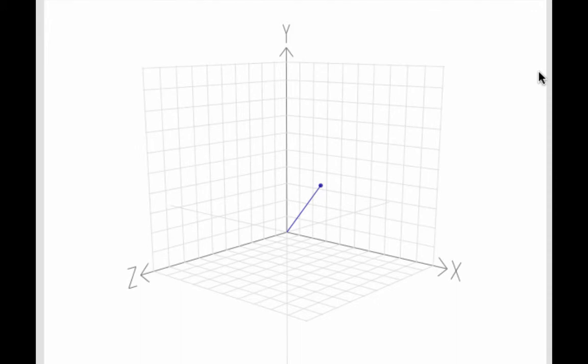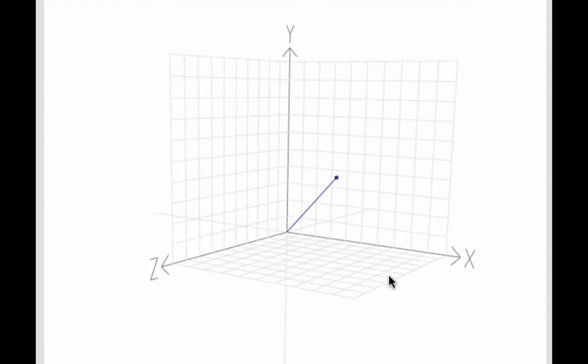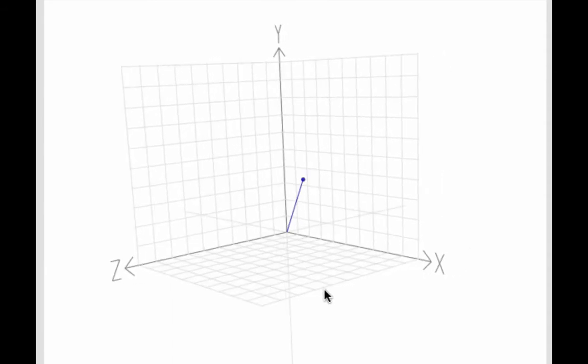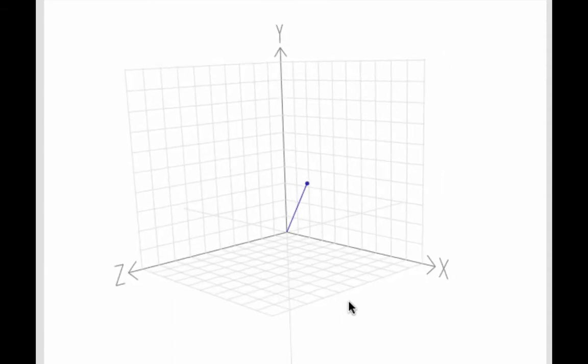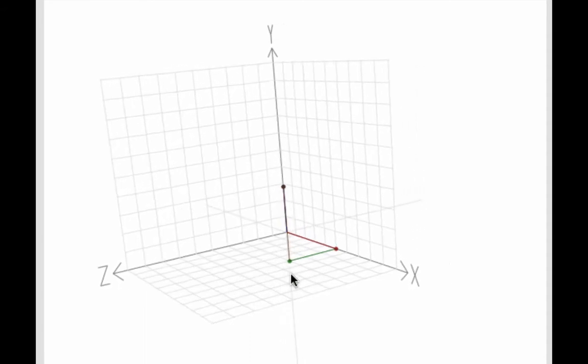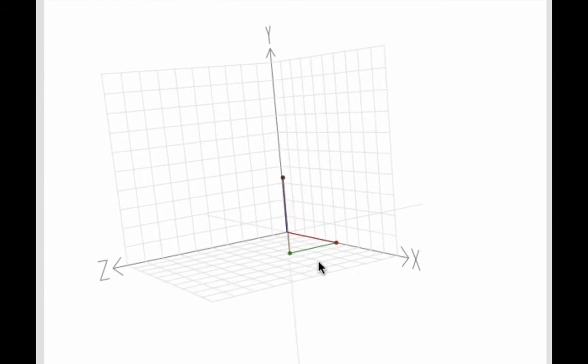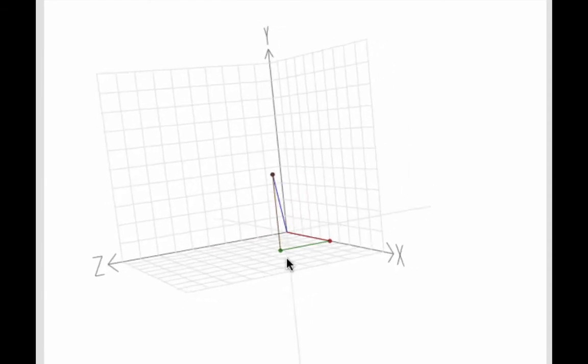Now let's look at how we can examine vectors in three dimensions. I have up on screen a visualizer, letting us look at a vector in three dimensions. The coordinates of this vector are 5 in x, 4 in y, and 3 in z. To make this easier to visualize, let's display the original vector with the parts of the vector in each direction decomposed.